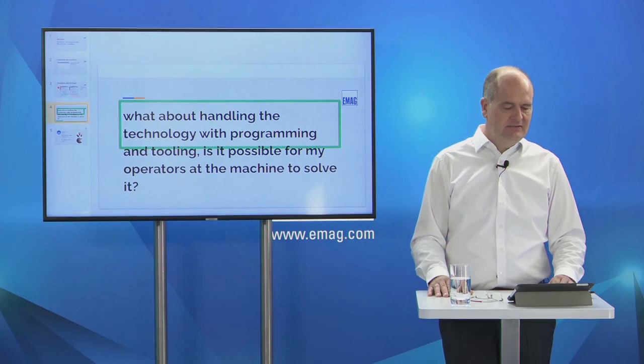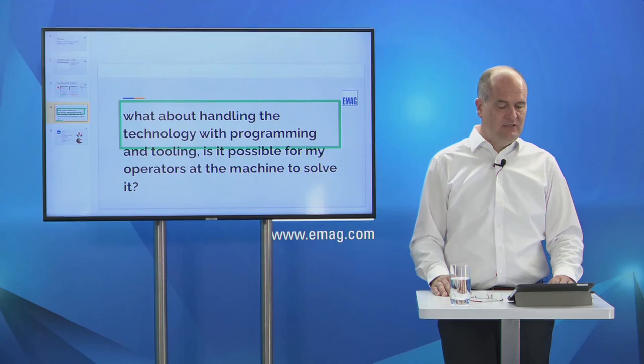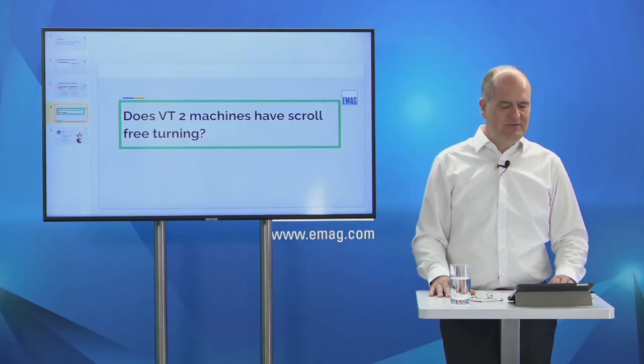What about handling the technology with programming and tooling — is it possible for operators at the machine to solve it? It is easy to handle. You can use the cycle for scroll free turning. Application engineers from the EMAC team will also help you by phone or in front of the machine. Do VT2 machines have scroll free turning? We do not prefer the VT2 machine because of its smaller tailstock compared to the VT4 and larger shaft machine types. We have solved some projects with the VT2, but we prefer the bigger machine, the VT4, because of the high radial forces that must be managed.